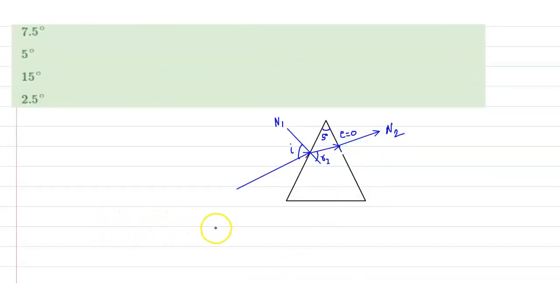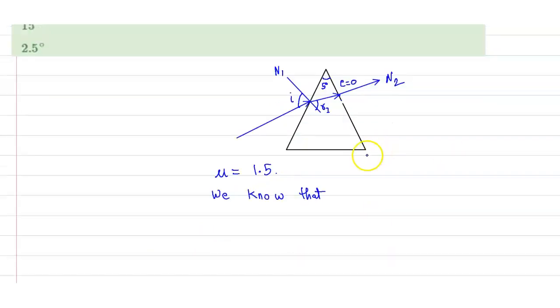The refractive index has been given as 1.5. Now we have to find out the angle of incidence on the face of the prism. So for a prism, we know that r1 plus r2 should be equal to A, the angle of the prism.